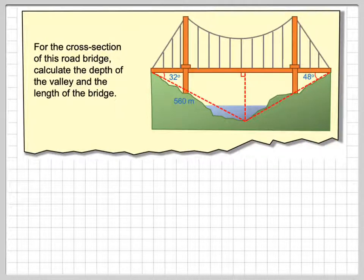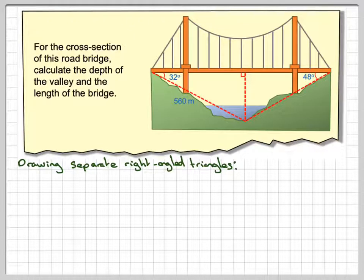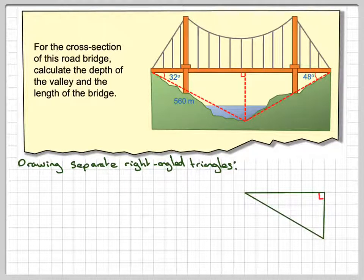These problems, because it's split into two different right-angled triangles, it's best to draw them out separately. So drawing separate right-angled triangles. First one we're going to draw out is this one. And then we're going to label this angle here 32, and we know that this length here is 560 metres.